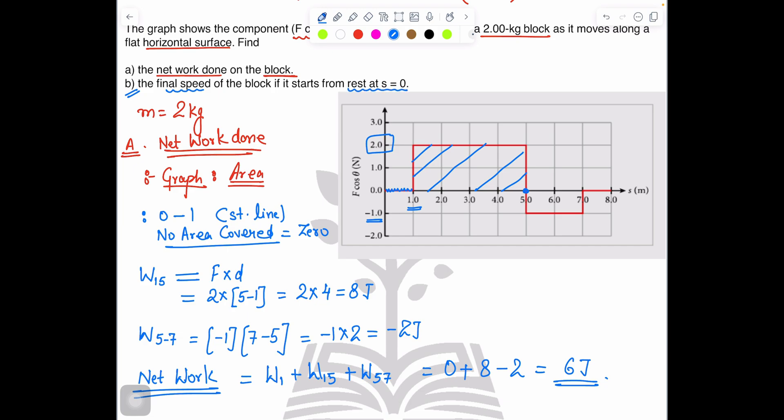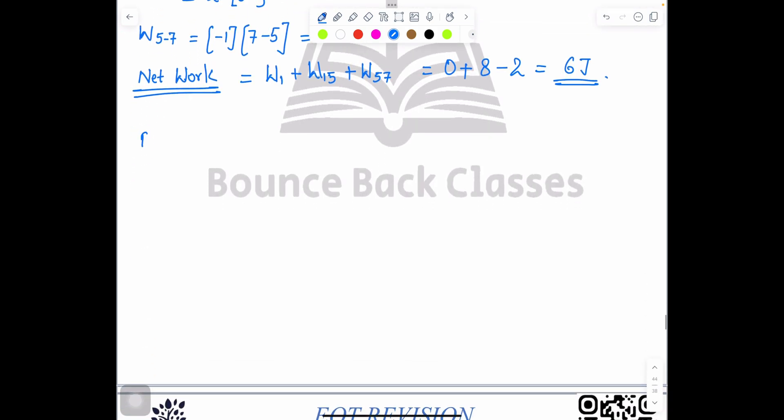Now move to the next part B, the final speed of the block if it starts from rest, v initial equals 0. As we know, work done equals kinetic energy. Work done is 6 joules, which equals half m v_f squared minus v_i squared. Kinetic energy equals half m v squared. If you have two options, v final and v initial, then it becomes half m v_f squared minus v_i squared.